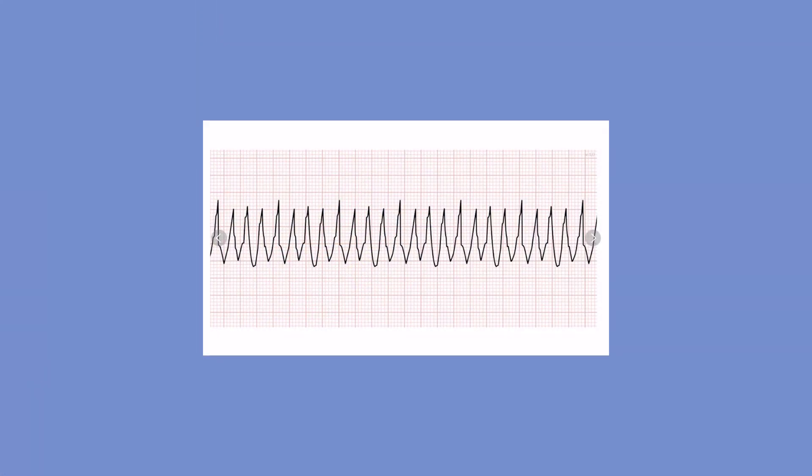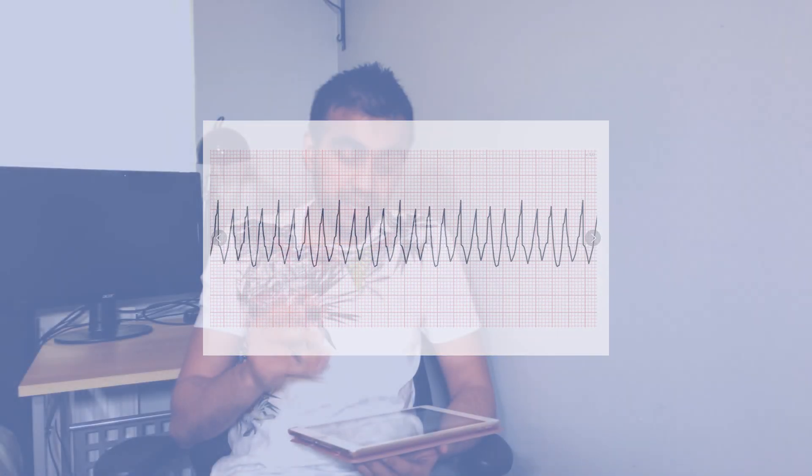In ventricular tachycardia the QRS complex is going to be broad. So what happens is you've got a broad QRS complex which is regular and fast. As you can see it's very fast, but it's also very tidy — it's repeating itself very regularly.